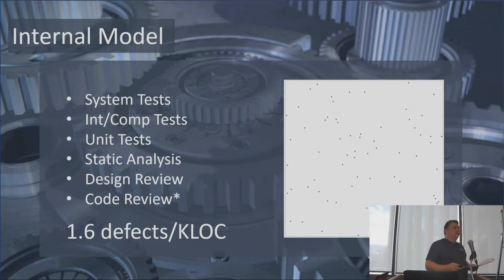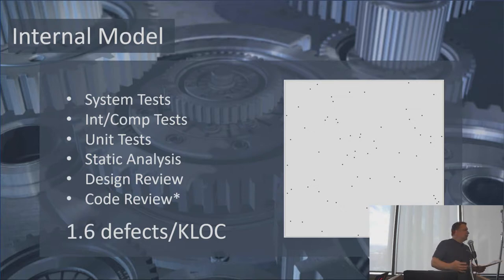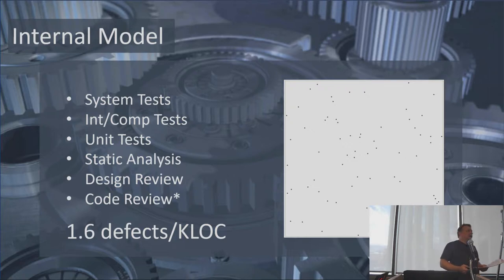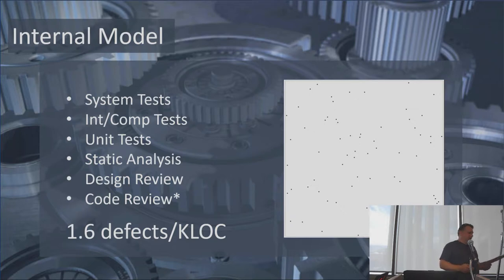If you want to be even lower, you can add more defect removal activities or step up the ones already discussed, since I used median values to calculate this. Typically a data center quality level is 0.1, not 1.6. And avionics and medical are areas where you'd want it even lower.